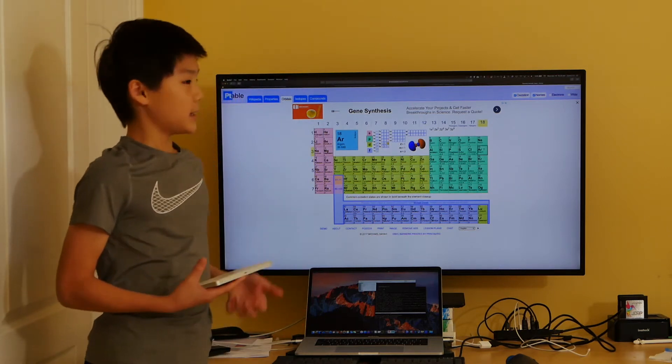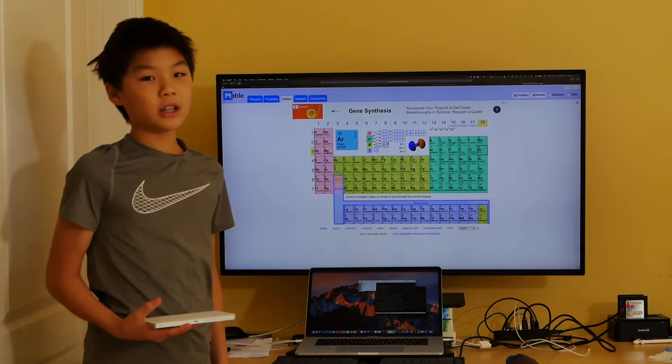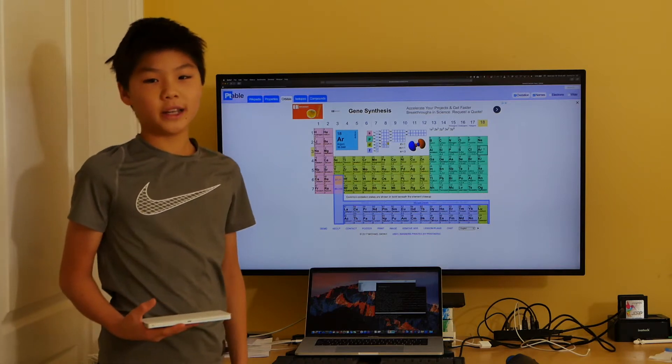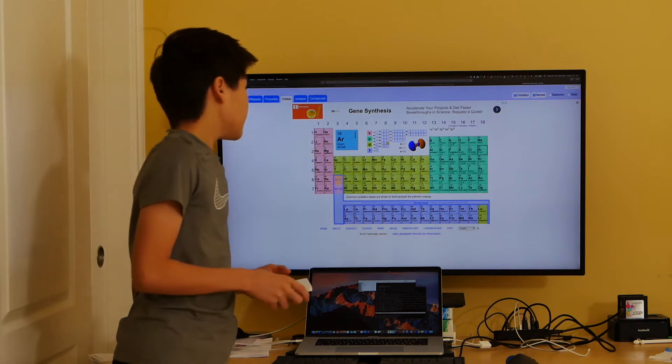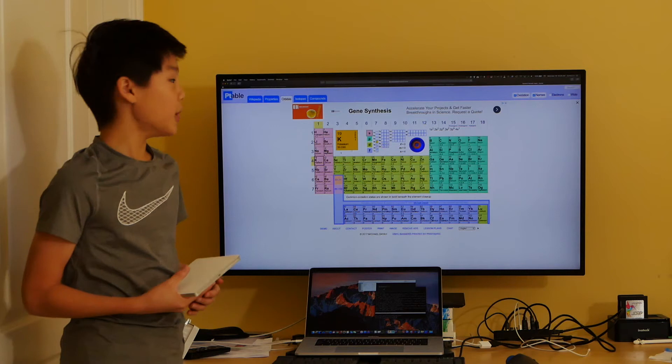Going from argon to potassium, we would expect the next electron to go into the third shell, yielding an electron configuration of 2, 8, 9. But instead, the electron of potassium goes into the fourth shell, giving us 2, 8, 8, 1.